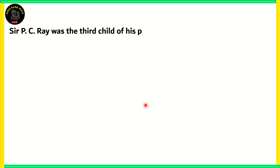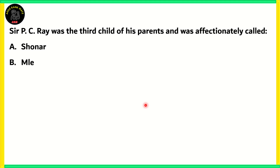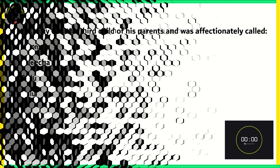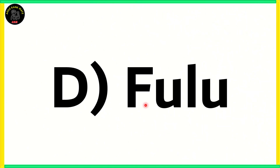Next question: Sir P.C. Ray was the third child of his parents and was affectionately called — A) Shonar, B) Melita, C) Sulu, or D) Fullu. The correct answer is Option D, Fullu. As already mentioned, there were six siblings, and P.C. Ray, being the third child, was nicknamed Fullu.